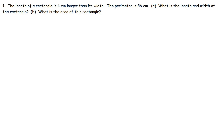In this video, we're going to talk about how to find the length and width of a rectangle if you're given the perimeter. So let's start with this problem: the length of a rectangle is 4 centimeters longer than its width. The perimeter is 56 centimeters. What is the length and the width of the rectangle?